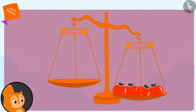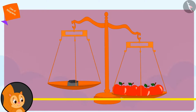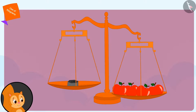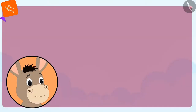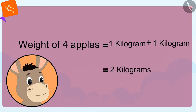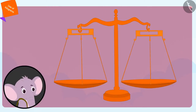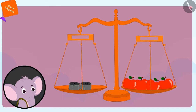Bhoala then weighed the 4 apples of Chanda on the scales at his shop. He placed the apples of Chanda on one side and 1 kg weight on the other side. Even then, the apples of Chanda were heavier. So Bhoala placed 1 kg more weight, and both sides of the scales came to the same level. Bhoala said the weight of 4 apples of Chanda is equal to 1 plus 1, that is 2 kgs. He then weighed Appu's 4 apples in exactly the same way and found that Appu's 4 apples also weighed 2 kgs.